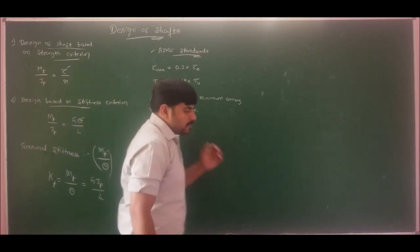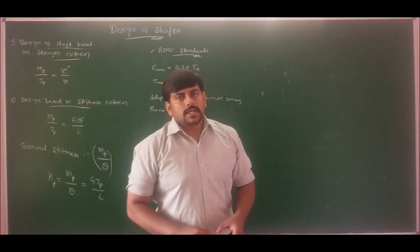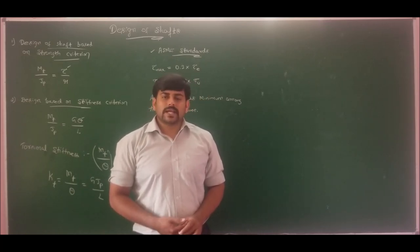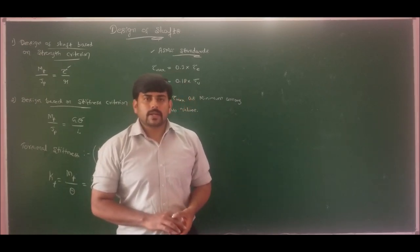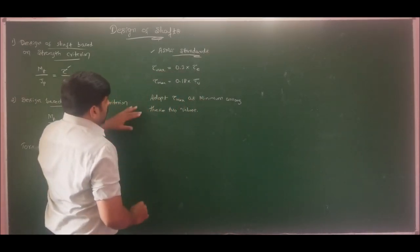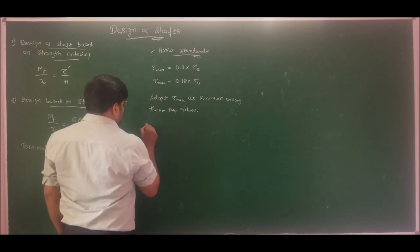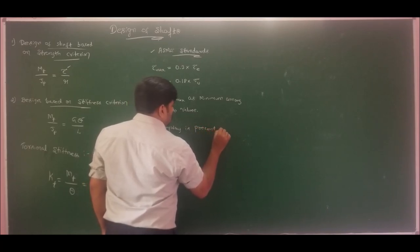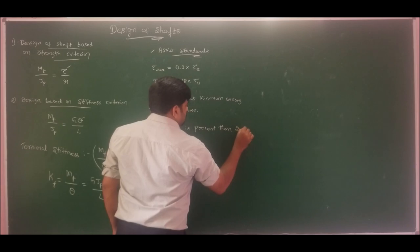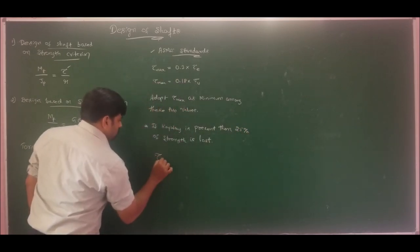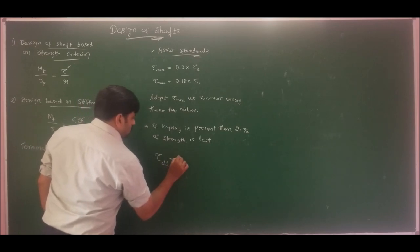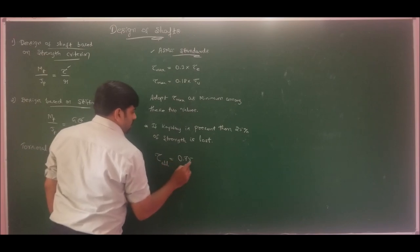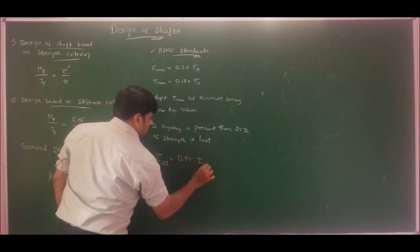If the maximum allowable shear stress is specified, we can directly determine the shaft diameter. We can also use maximum normal stress to determine the diameter. If keyways are present, 25% of strength is lost, so the allowable stress becomes 0.75 times τ_max.